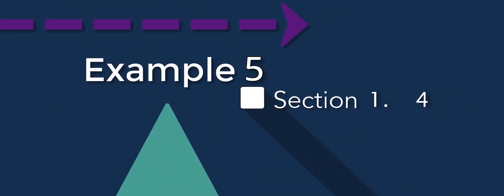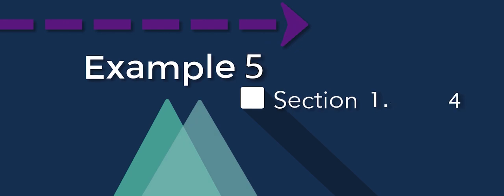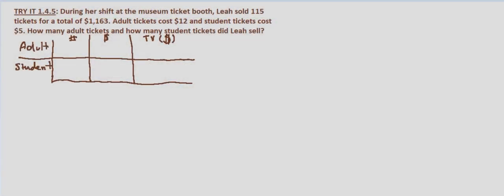In this problem, we're looking at sales of tickets. We're told that during her shift at the museum ticket booth, Leah sold 115 tickets for a total of $1,163. Adult tickets cost $12 and student tickets cost $5. We're asked how many of each type of ticket, adults and student tickets, did Leah sell?